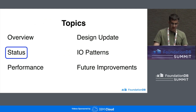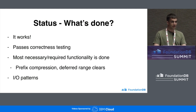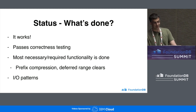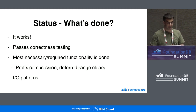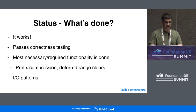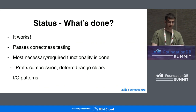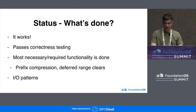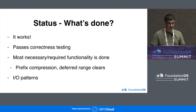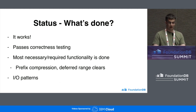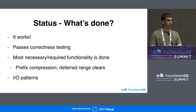A little bit on status. What's done? First and foremost, it works, and it's actually been shipping in recent patch releases of 6.2. It passes correctness testing. Most of the necessary functionality is done. Notably, prefix compression is done and is in final form for the foreseeable future. Deferred range clears are done and also are in final form. Pretty much all the I/O patterns are where they need to be at this point.